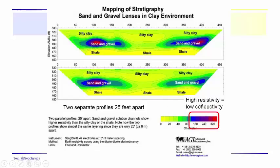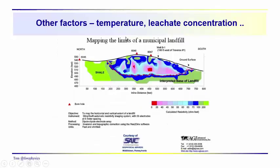Get used to thinking in terms of the comparison between resistivity and conductivity. We started with the discussion of terrain conductivity methods, and now we're looking at resistivity — the reciprocal of that. As another application: try to find a landfill, check for leaks, and map the extents of an old landfill. The resistivity method allows us to map out the distribution of resistivities associated with a landfill and helps us determine its limits.